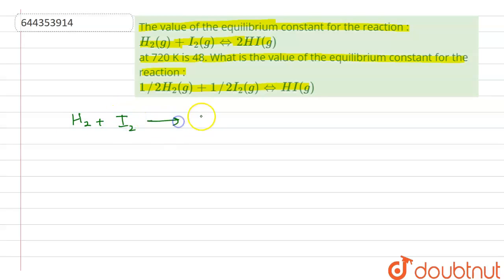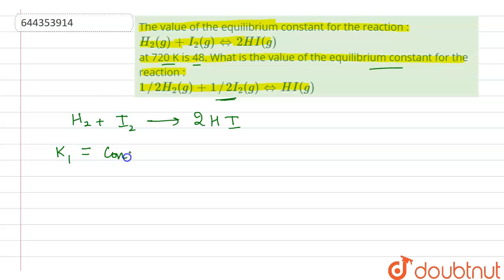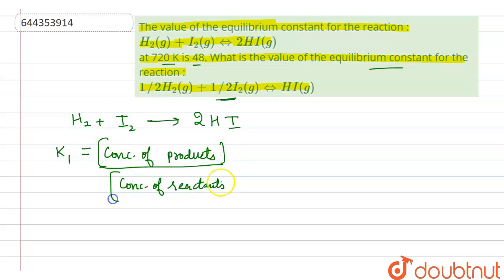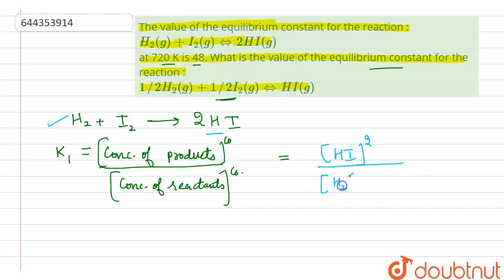We are given the reaction H₂ + I₂ → 2HI, and the equilibrium constant at 720 Kelvin. We need to find the equilibrium constant for the second reaction. For K₁, the equilibrium constant equals concentration of products upon concentration of reactants, each raised to the power of their coefficients. So K₁ = [HI]² / ([H₂][I₂]). Let's call this reaction 1.